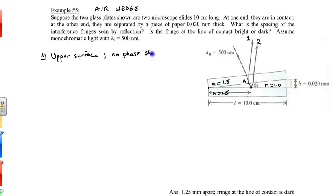Then we look at the lower surface, point B. We want to discuss what kind of phase shift occurs here. We're going from less dense to more dense, so we have a 180 degree phase shift.